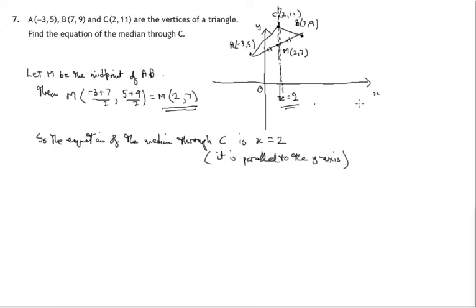Now if you hadn't noticed that and you decided you wanted to work out the gradient of the line joining M to C and you do the y difference, say 11 minus 7 over the x difference, 2 minus 2, you would end up with 4 over 0. And that's undefined. We can't divide any numbers by 0.